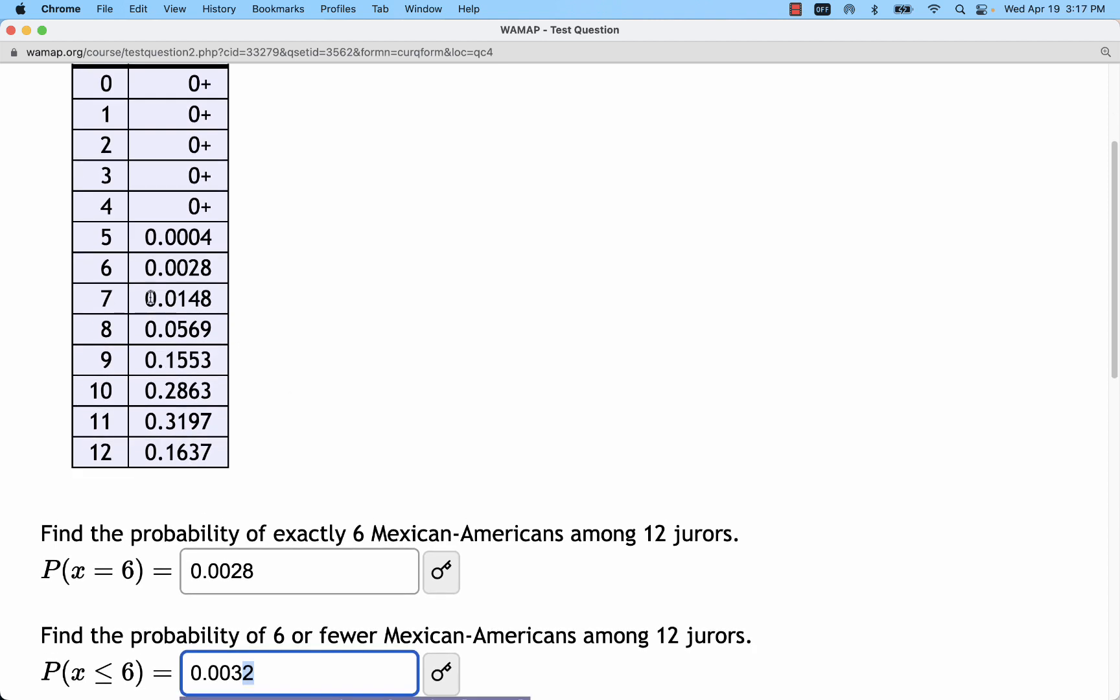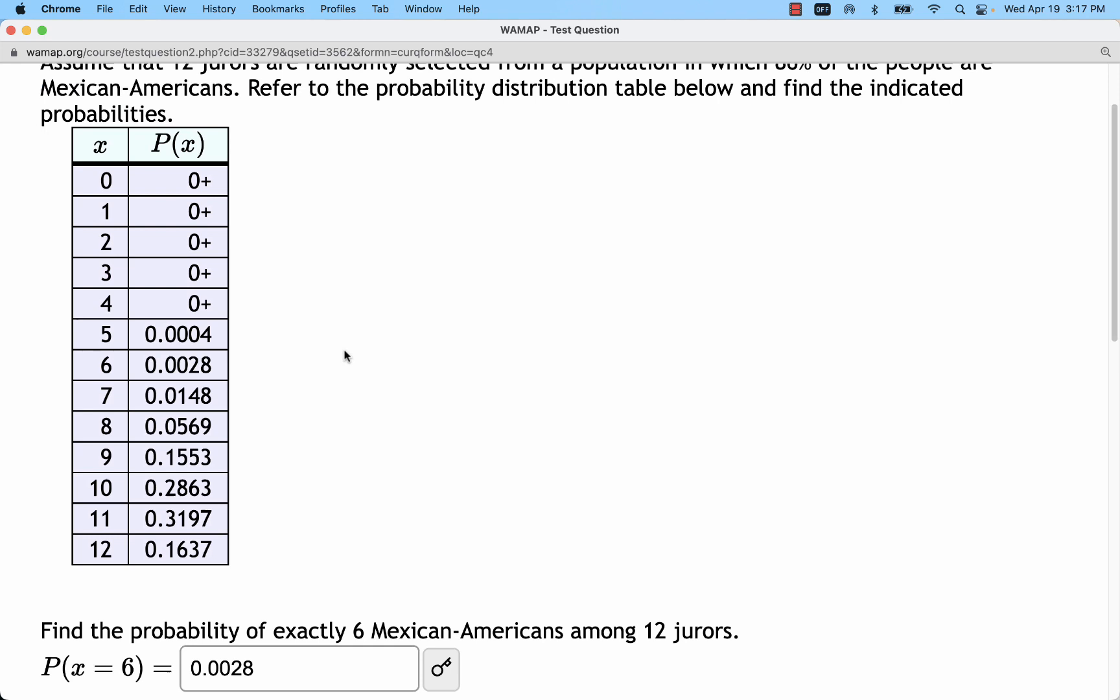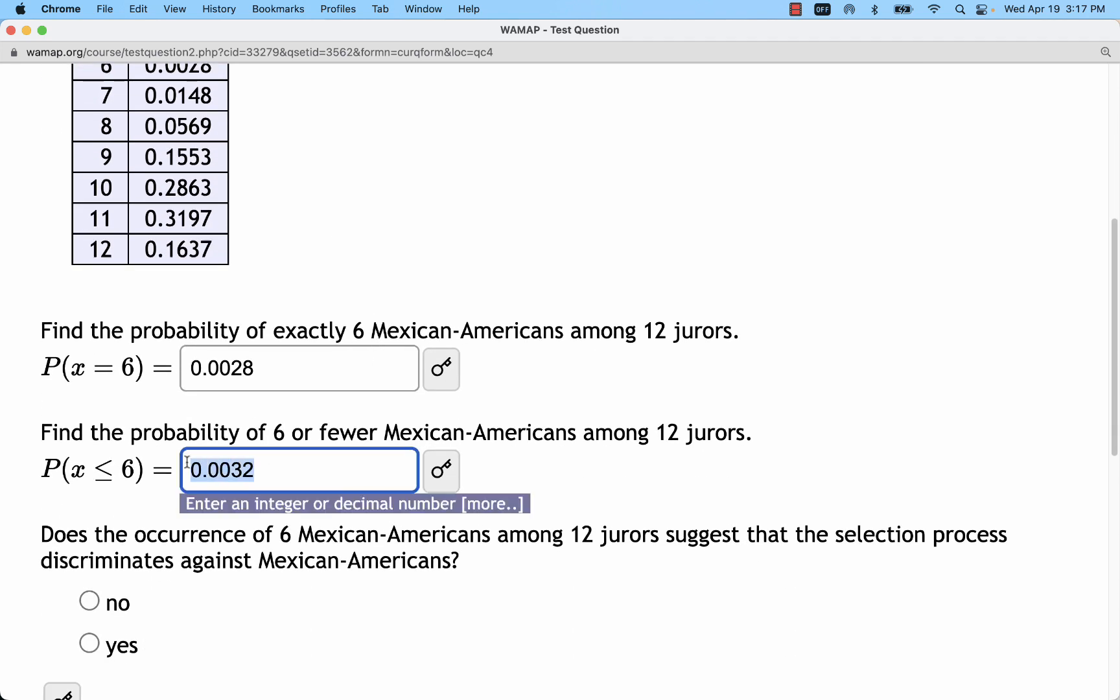So sometimes what we'll actually do is calculate the total on the opposite side of the 6 in this case and then subtract it from 1 or take the complement. So if this added up to 99.68% or 0.9968, then all the rest of it above should add up to the 0.0032. But on this problem, we're not going to get that in depth with it. This should be close enough.